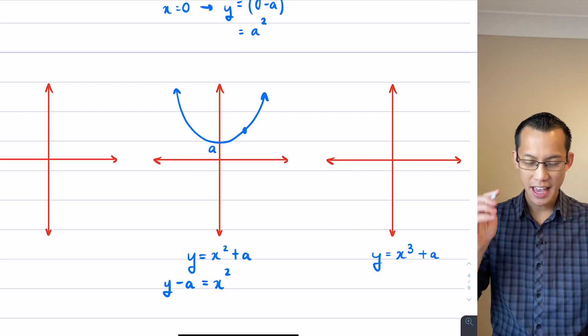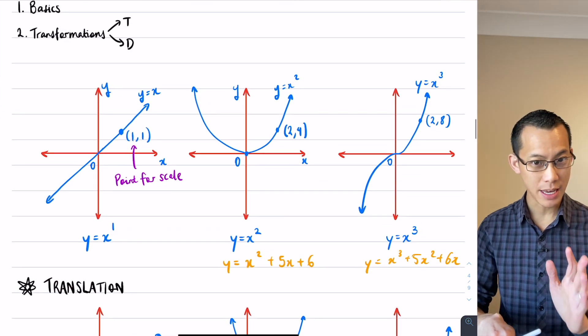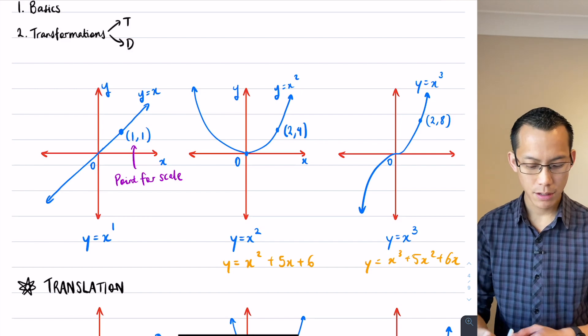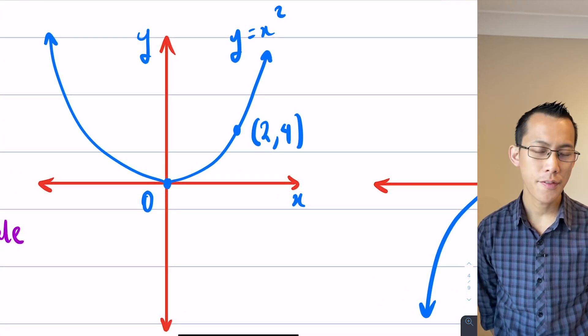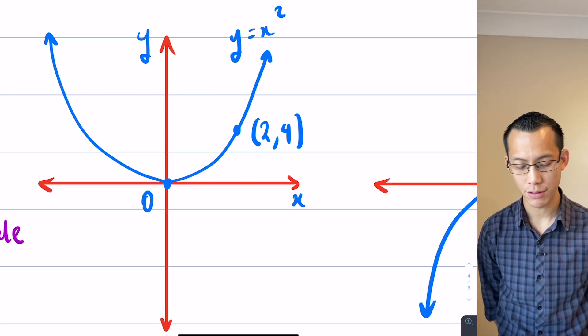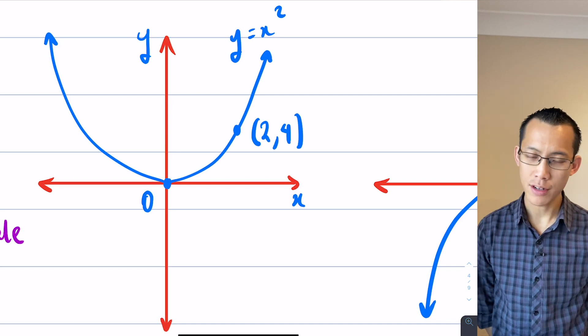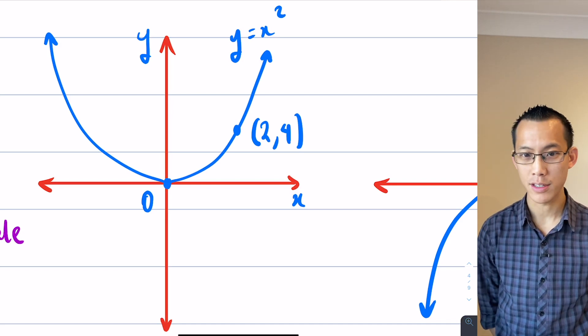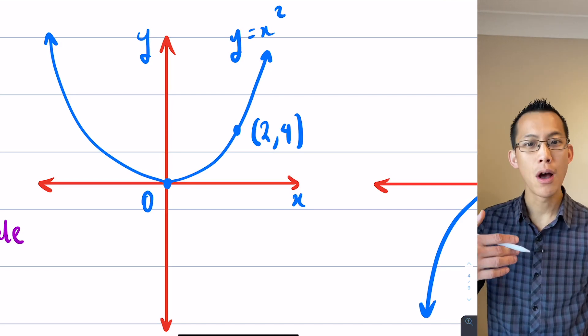Remember what we're saying is this is the same graph that we started with, y equals x squared, but we have moved upwards A units. So you know how I put this point here at 2,4? Well, if I supply the same x value, then the y value should be moved up A units. So if I put in 2 as an x value, I won't get 4 as a y value. I'll get 4 plus A.